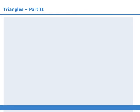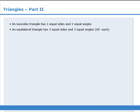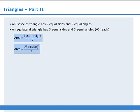To summarize: in this lesson, we learned that an isosceles triangle has two equal sides and two equal angles. An equilateral triangle has three equal sides and three equal angles. We have a formula that can be used to find the area of any triangle, and we have a special formula that can be used to find the area of an equilateral triangle. Finally, the altitudes of isosceles triangles and equilateral triangles always bisect the base.